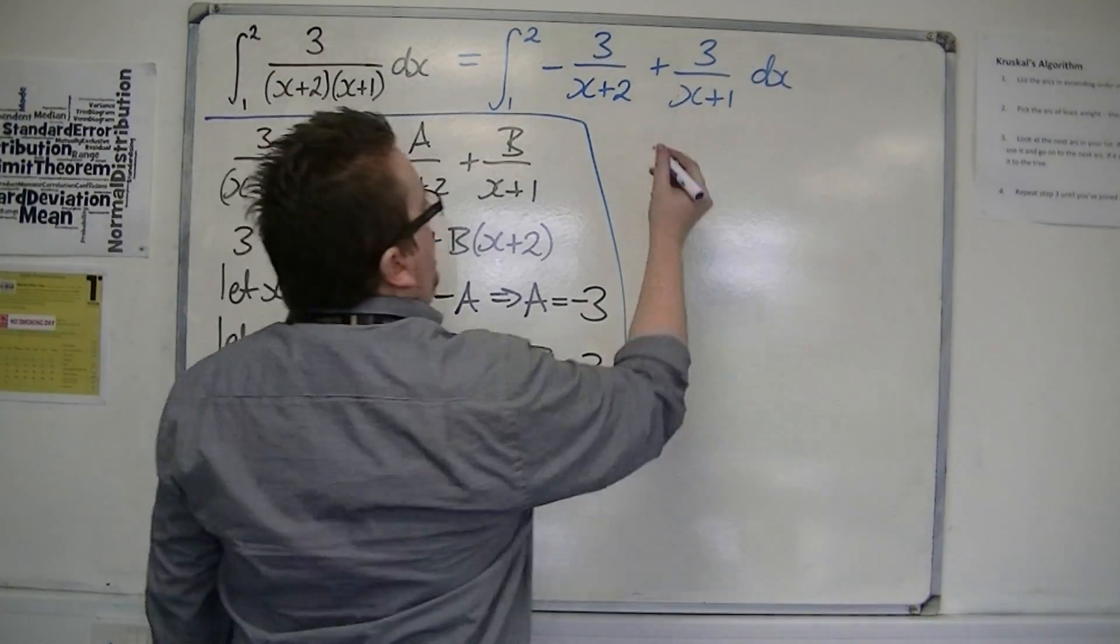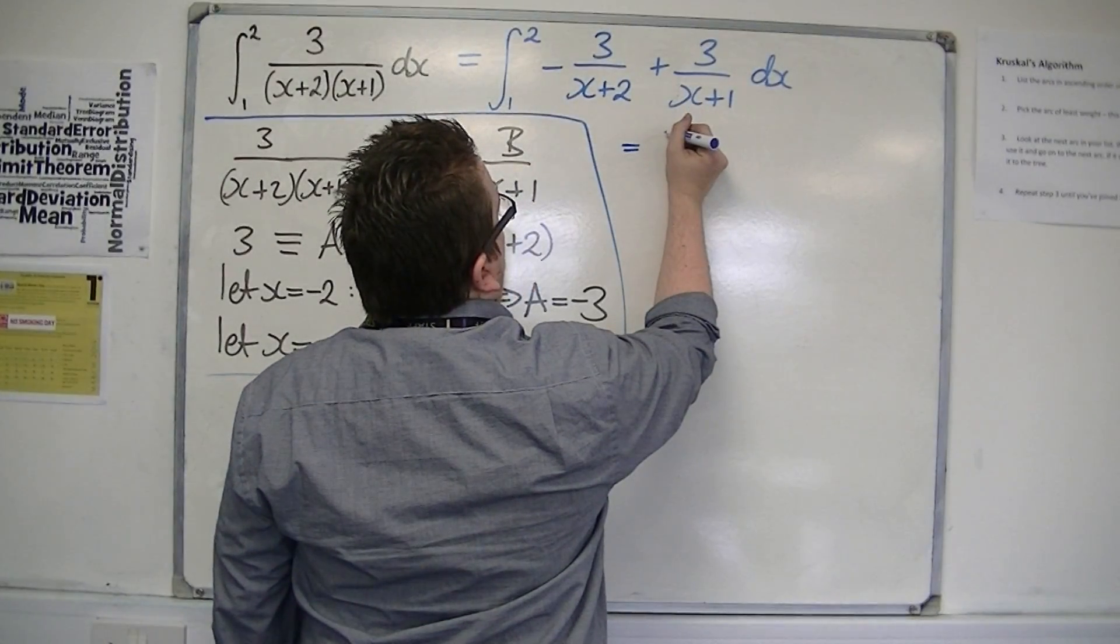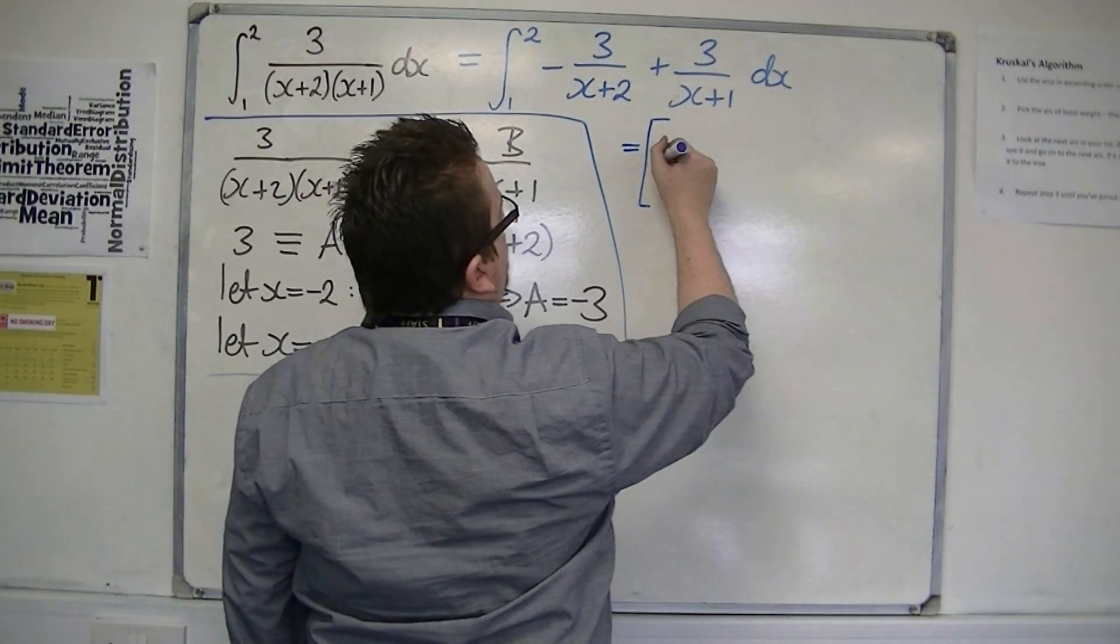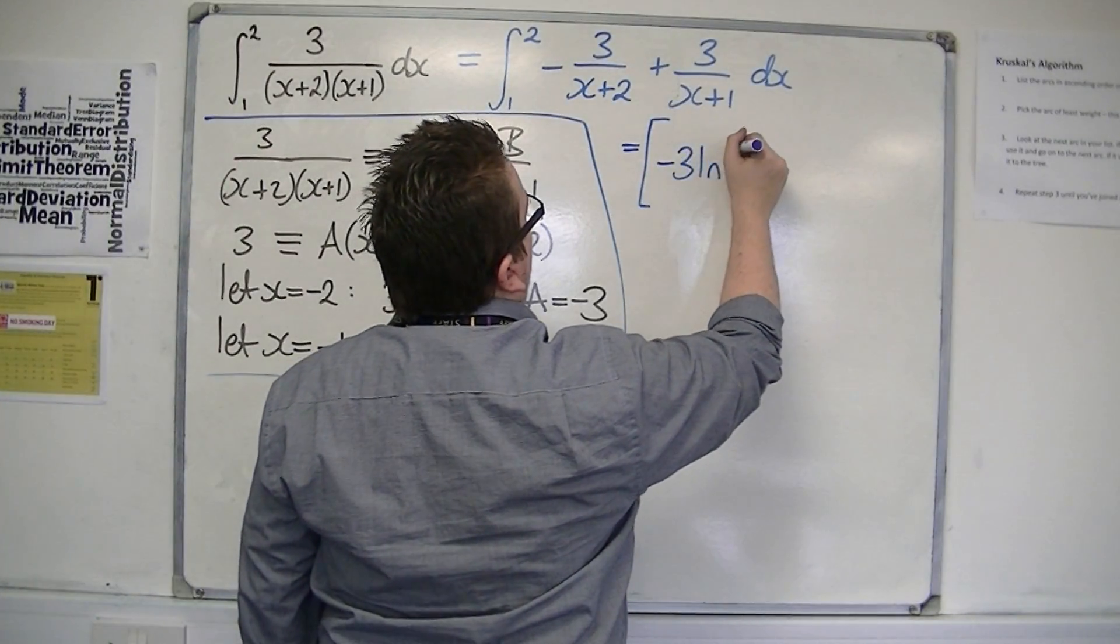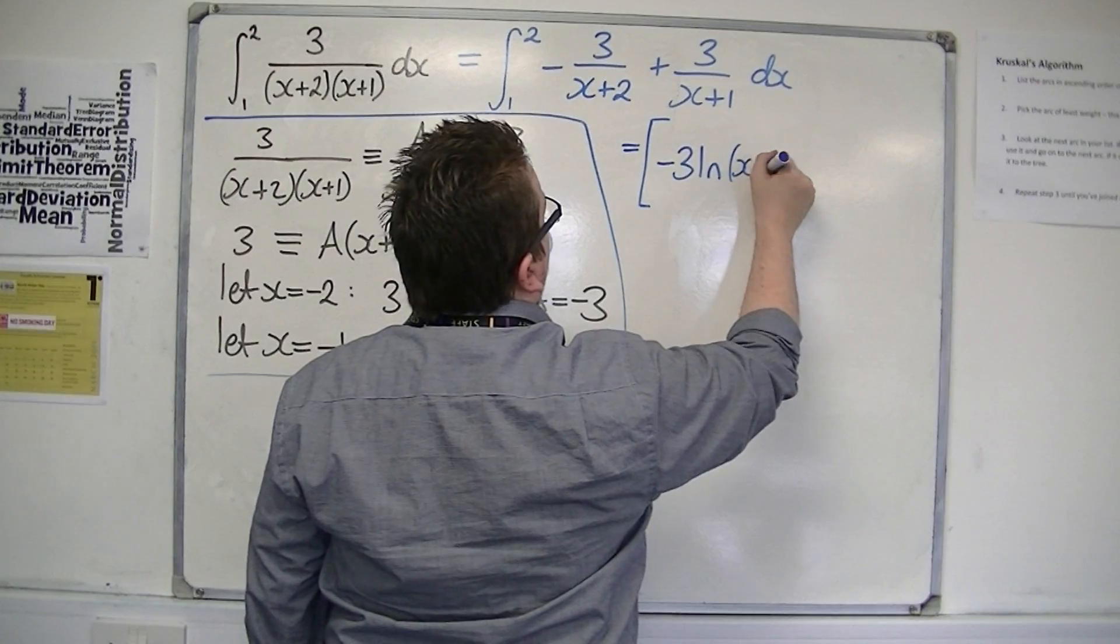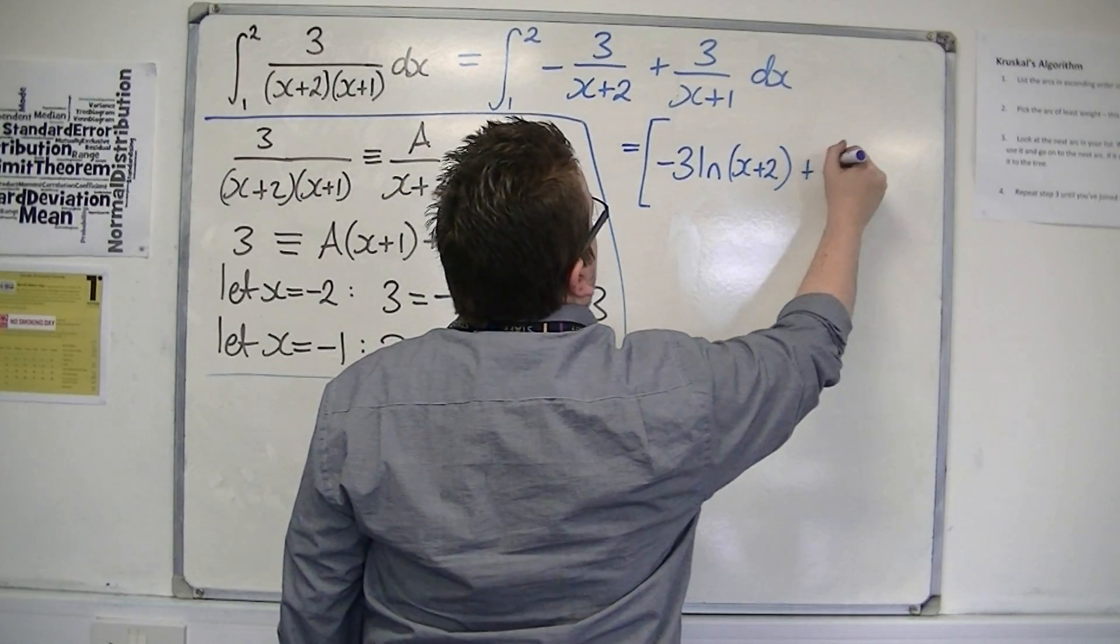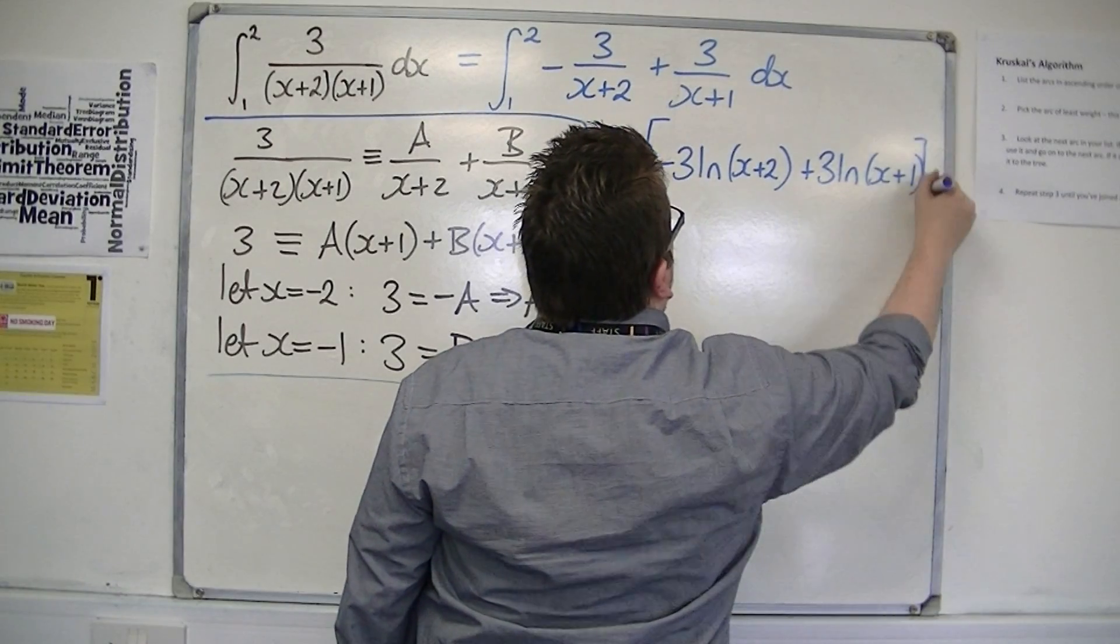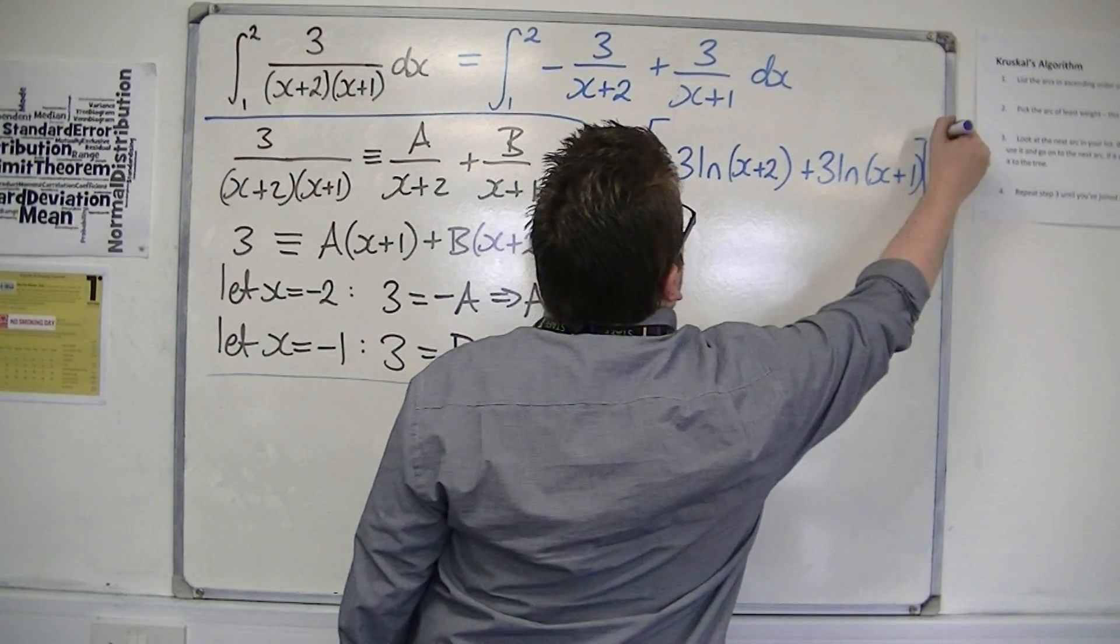So this is going to be equal to, when integrating, -3 ln(x+2) + 3 ln(x+1), integrated between 1 and 2.